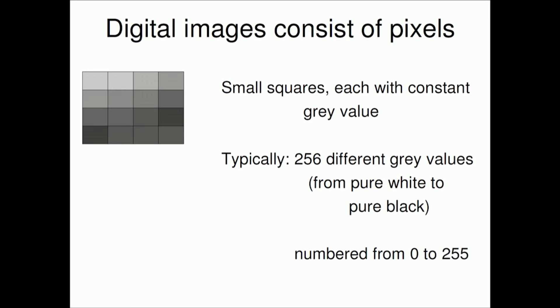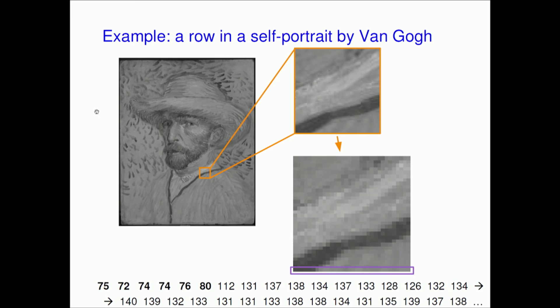As we saw earlier, digital images consist of pixels with their grey values, and typically we have 256 different grey values going from all black to all white. Here I'm showing a self-portrait by Van Gogh, blown up enough that you start seeing individual pixels. For one row I've printed the numbers below it — the smaller the number, the darker the colour. I've printed those below 100 in bold.